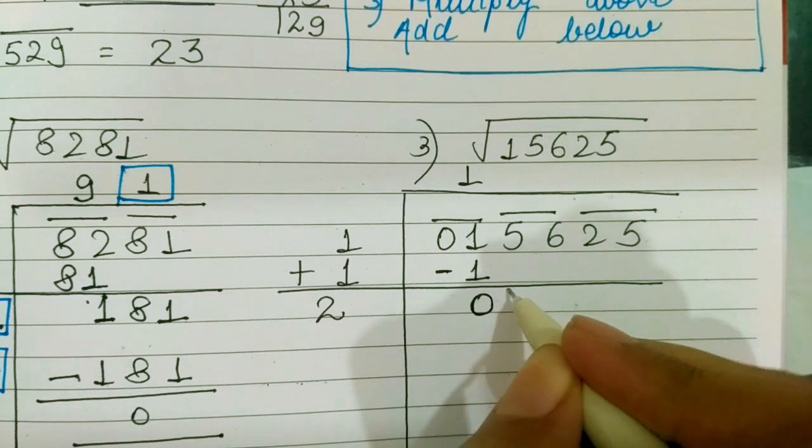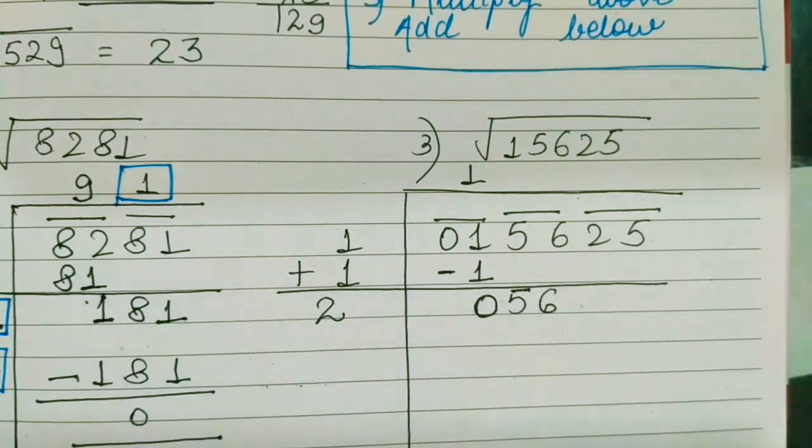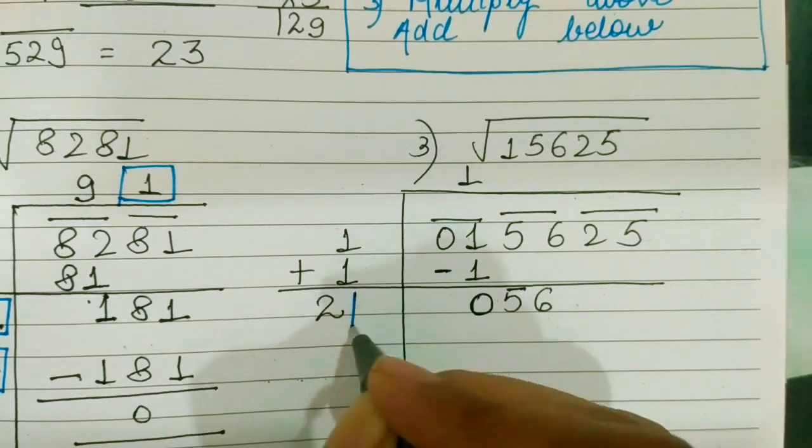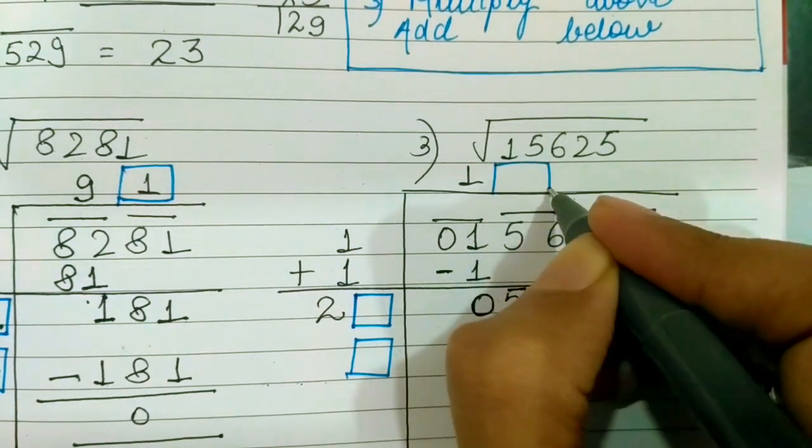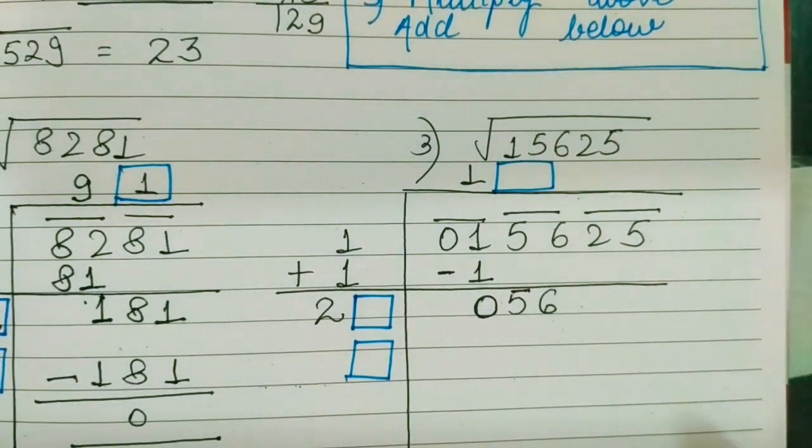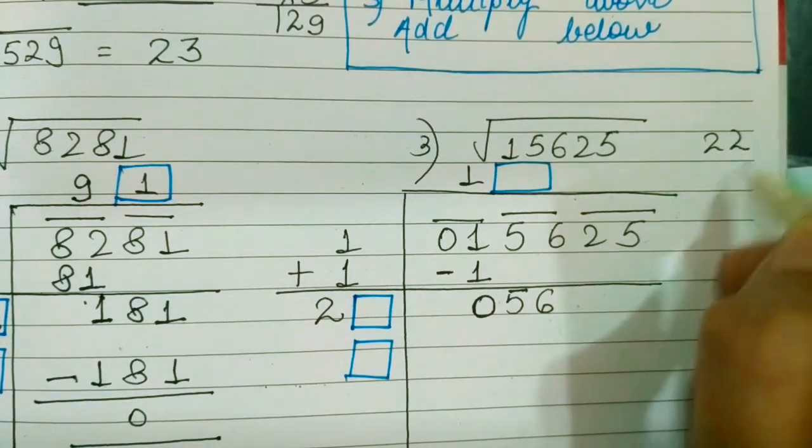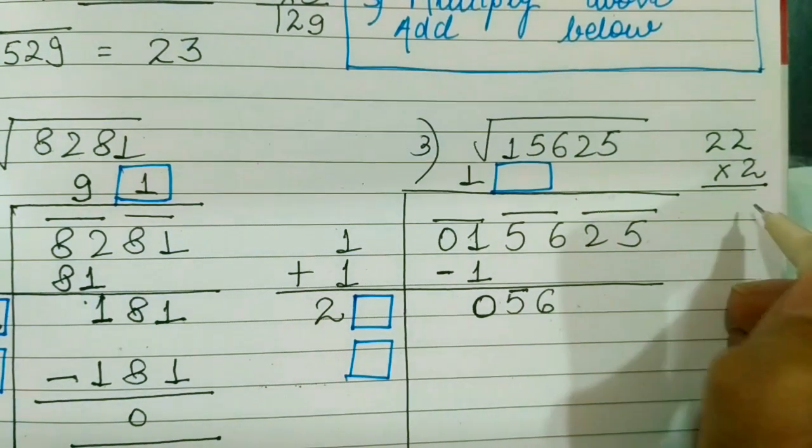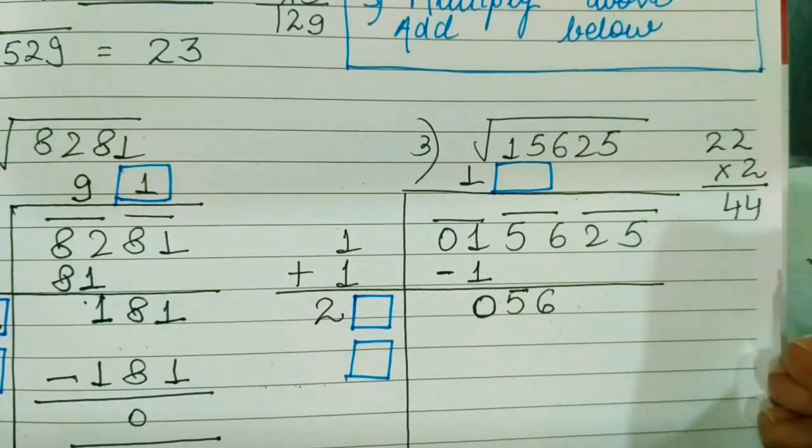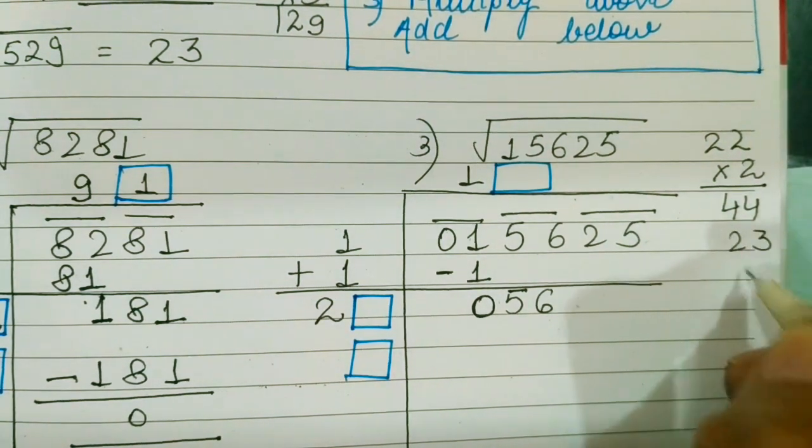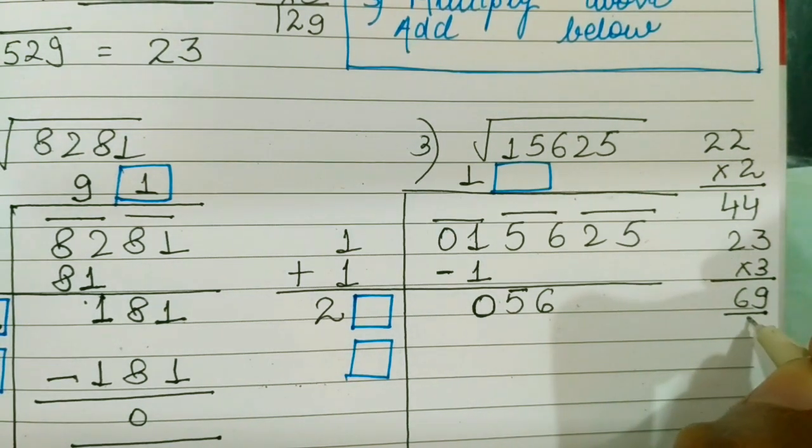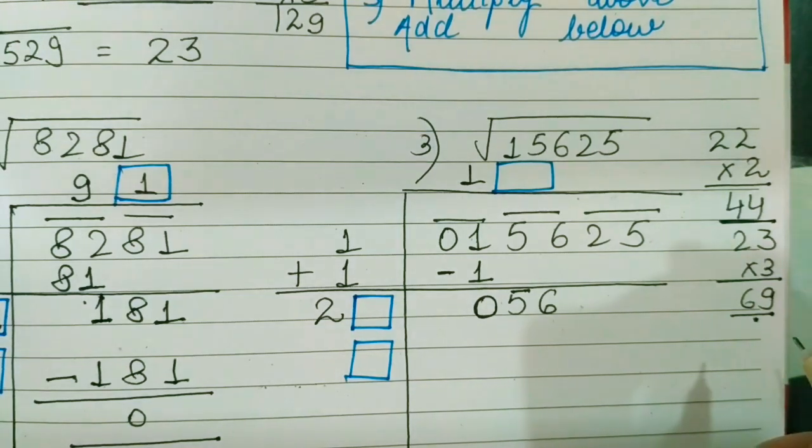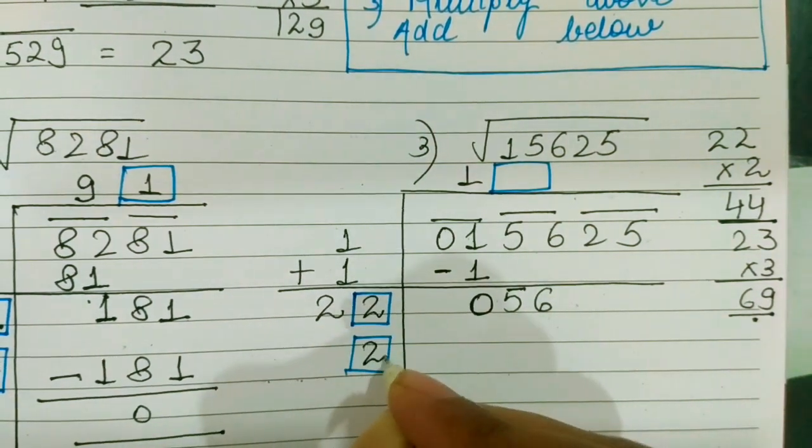Copy the next pair. Next pair is 56. Now I have to write a number near to 2, multiplying these which will give me a number near to 56. This I am going to find by hit and trial method. If I fill in the box 2, 22 into 2 will give me 44. If in the box I fill 3, 23 into 3 is going to give me 69 which is larger than 56. So the nearest lower number is 44. I am going to fill 2 in the box.